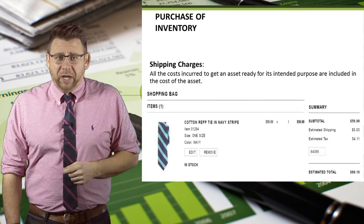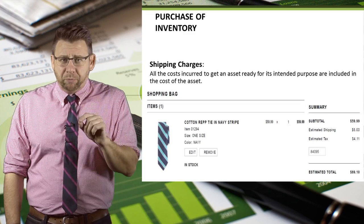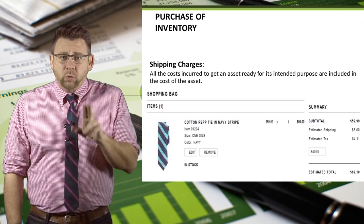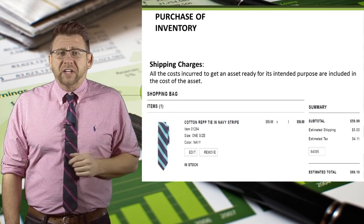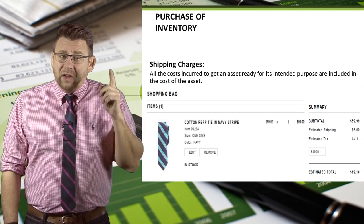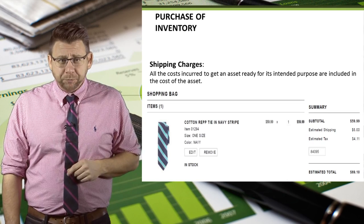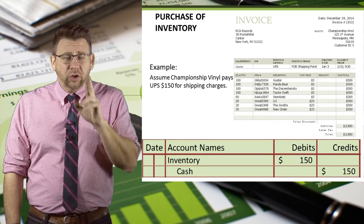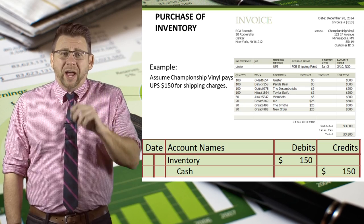Let's look at this example of a tie I recently bought. By definition, all the costs incurred to get an asset ready for its intended purpose are included in the cost of the asset. Those costs would include the cost to ship the tie to me as well as the taxes I have to pay. So how much did the tie cost me? Was it $59.99, the cost of the tie? Or was it $69.10, the cost of the tie plus shipping plus sales tax? Well, according to my credit card statement, it was $69.10, and that's the amount I would record as the cost of the tie. So the cost of our records should include the $3,800 we paid for the records, but also the $150 of shipping, and that's why we debited inventory.